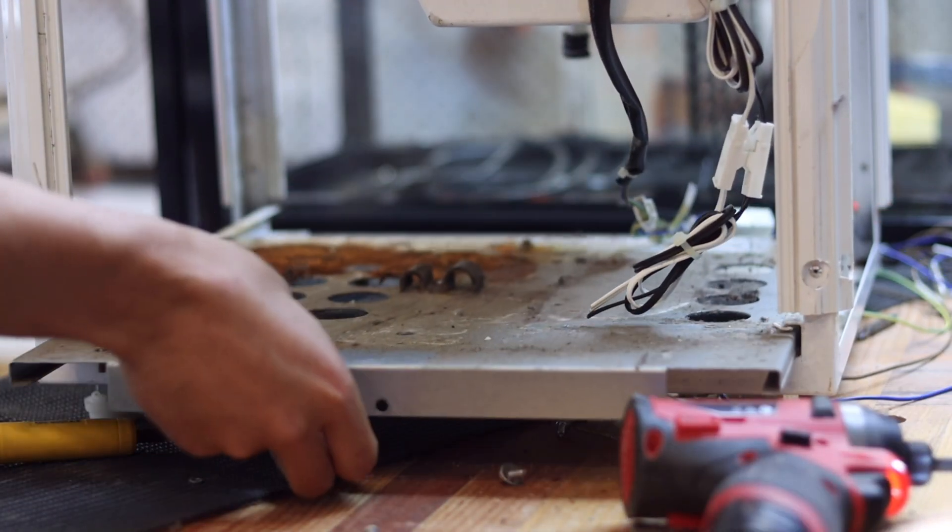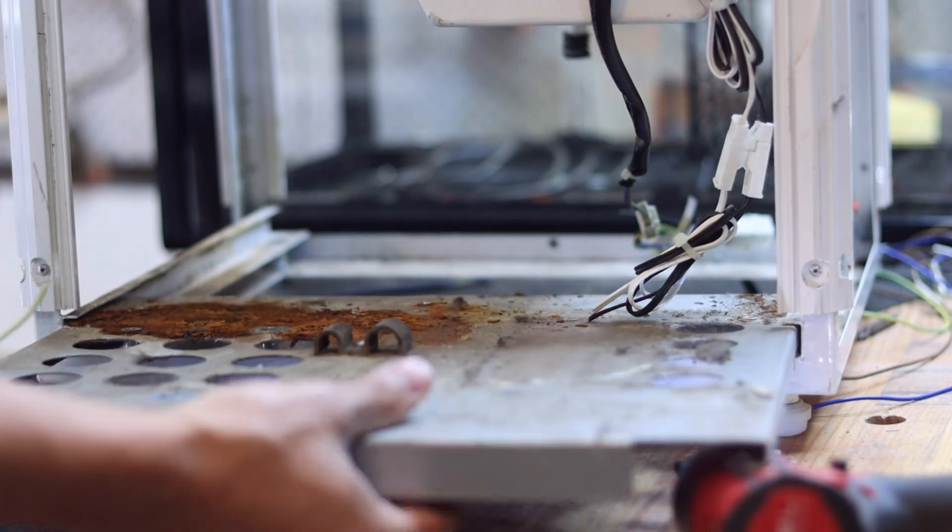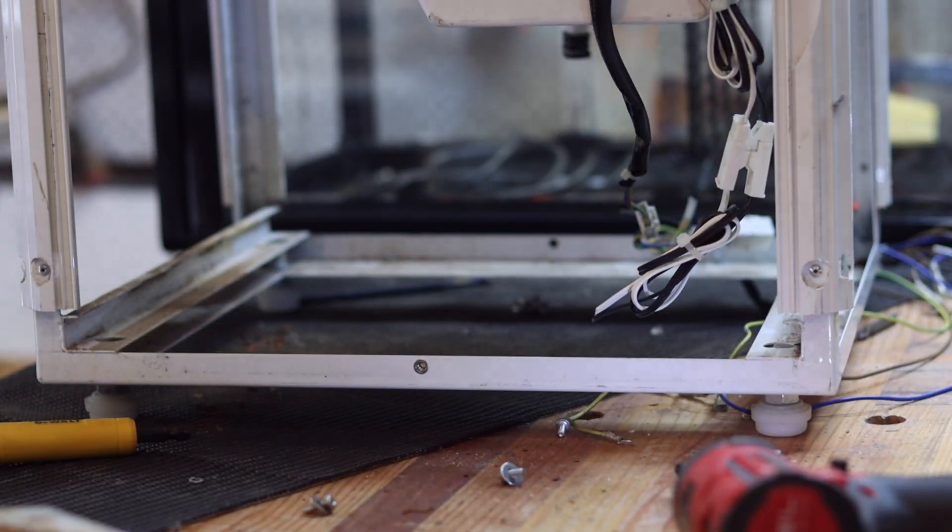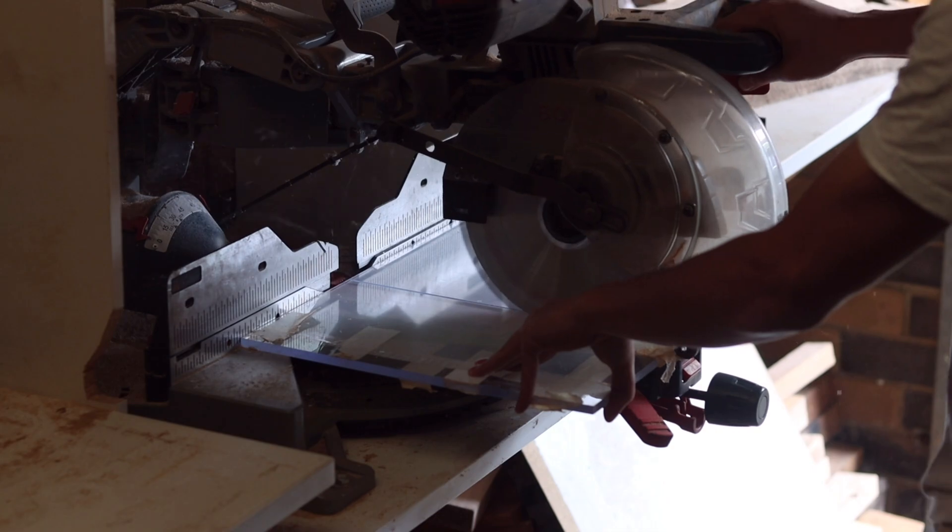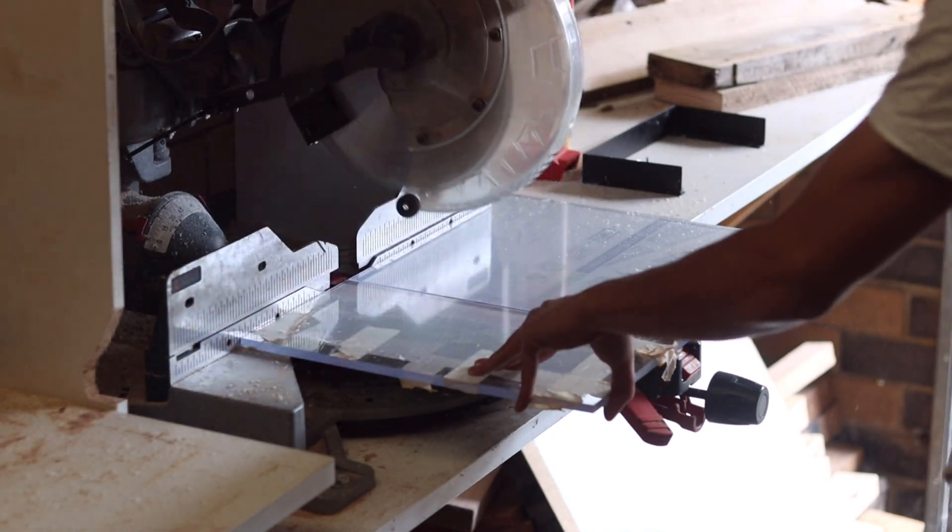I also decided to replace the old rusty metal shelf on the bottom of the fridge with a polycarbonate panel. It will allow me to easily screw and secure electronic parts directly onto the panel.